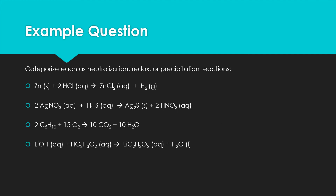Let's work through practice examples and categorize each reaction. For the first one, I start with states of matter: we've got a solid, aqueous, aqueous, and gas. No solid is forming from two aqueous solutions, so it's not a precipitation reaction. There's a hydrogen in front suggesting an acid, but there's no hydroxide base and no water being created, so it's not a neutralization reaction either.